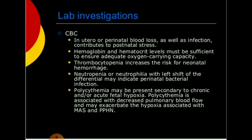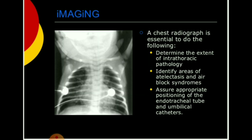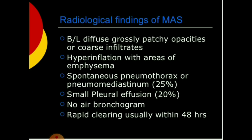Polycythemia may be present secondary to chronic or acute fetal hypoxia and is associated with decreased pulmonary blood flow, potentially exacerbating hypoxia with MAS and PPHN. Chest X-ray determines the extent of intrathoracic pathology, identifies areas of atelectasis and air block syndromes, and assists in appropriate positioning of the endotracheal tube and umbilical catheters.